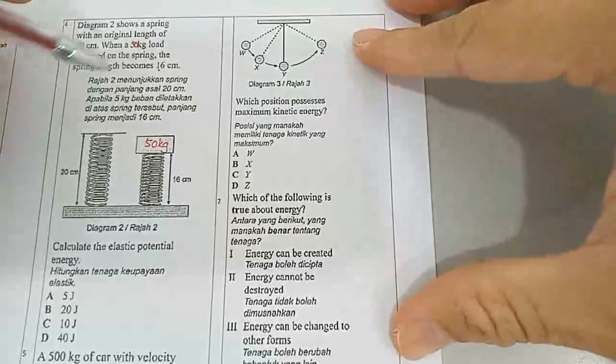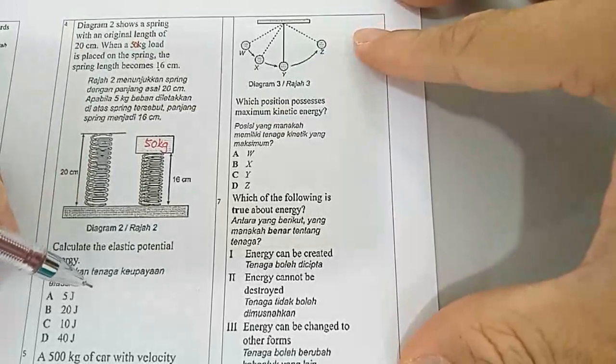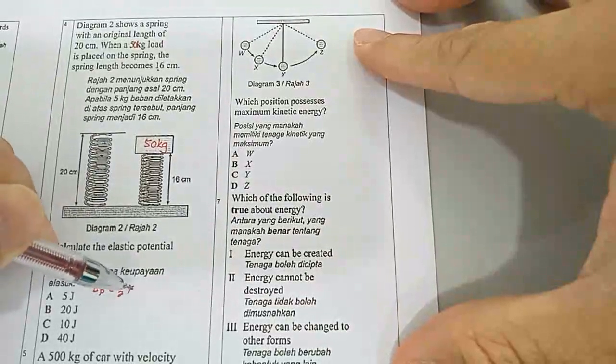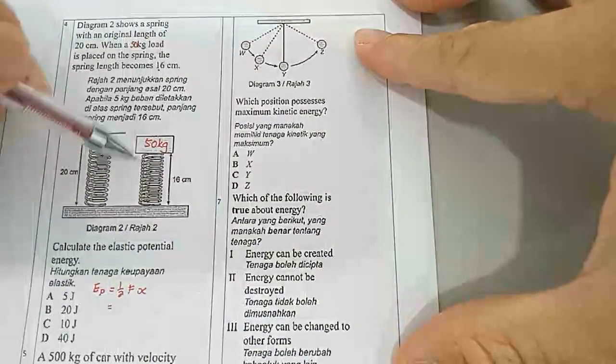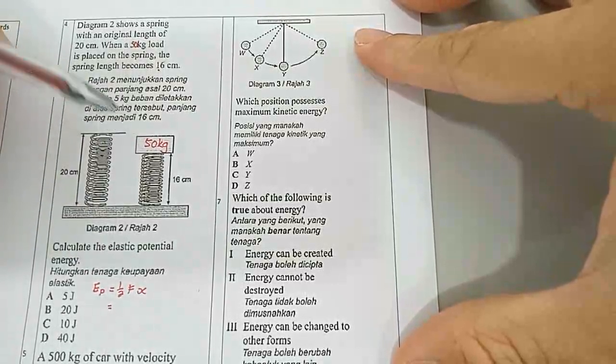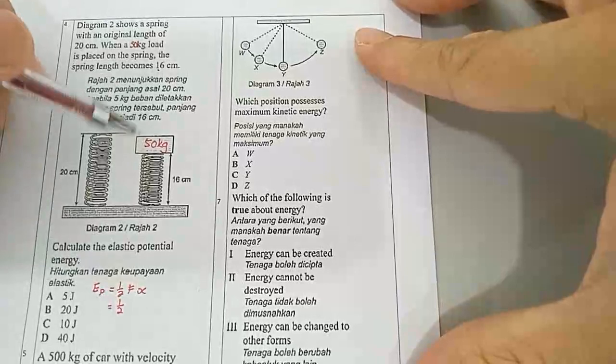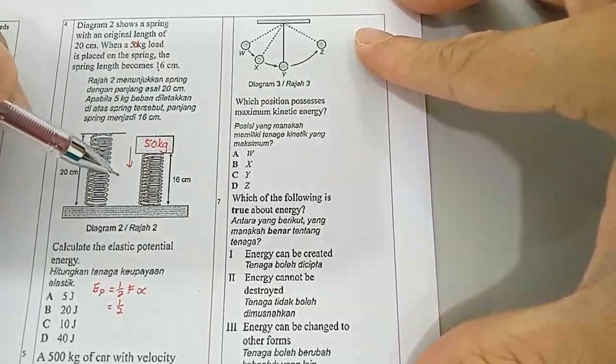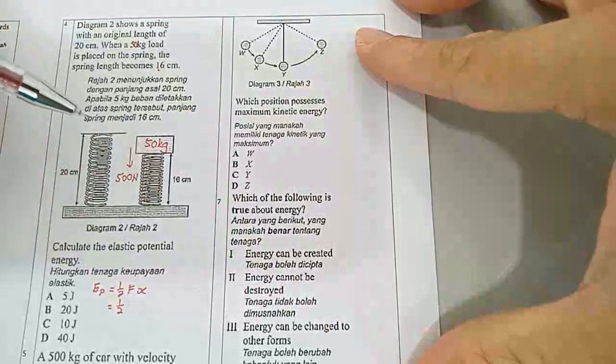Now, let's calculate the elastic potential energy. We can calculate elastic potential energy by using the equation half Fx. So this is the force that is acting on the spring, and this is the extension of the spring or in this case the compression of the spring. So F is the force. In this case, the force is the weight of this 50 kilogram object. So the weight of 50 kilogram object is 500 Newton.